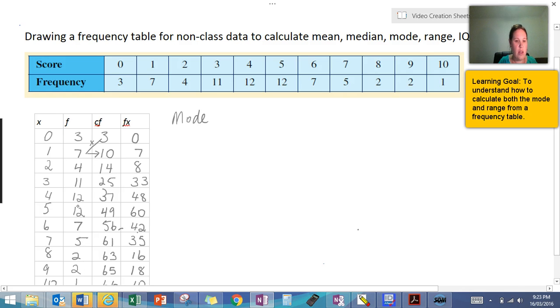So we have a look down here, and we actually have two that have a frequency of 12. So a mode is going to be 4 and 5, which means it is bimodal, because they both have the same frequency.